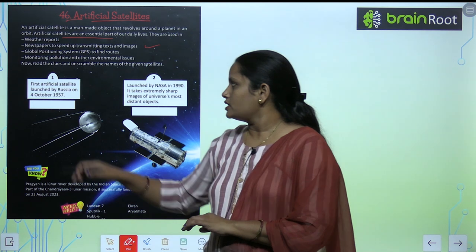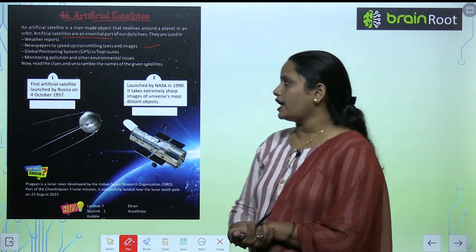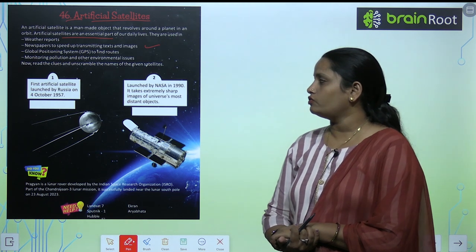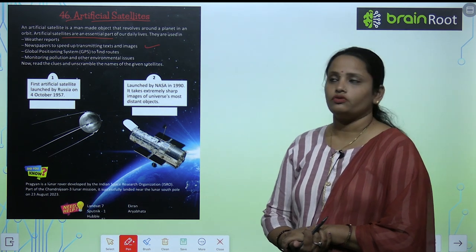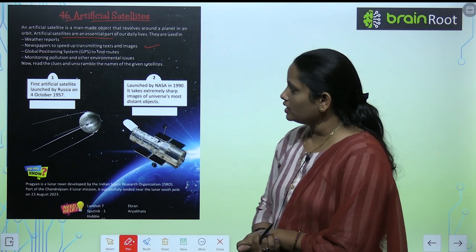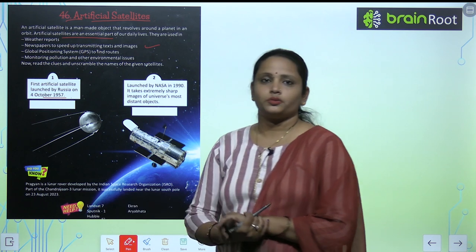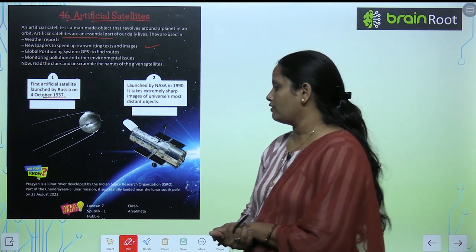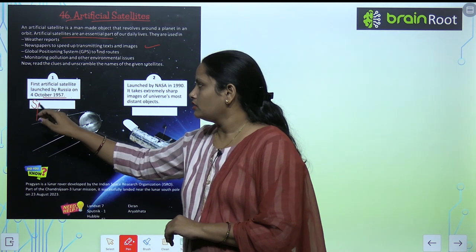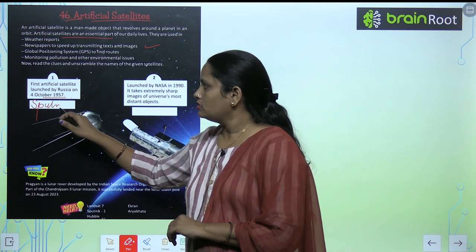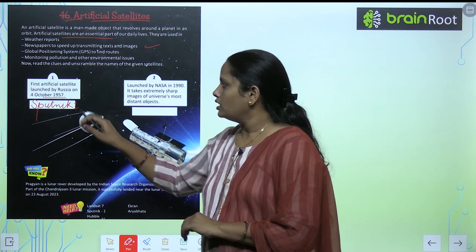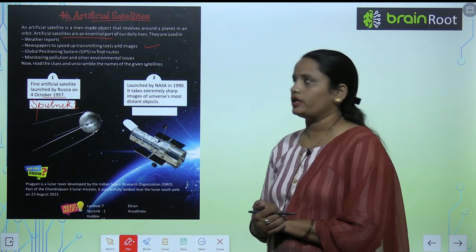First artificial satellite launched by Russia on 4 October 1957. So the first artificial satellite launched by Russia on 4 October 1957 is Sputnik 1.